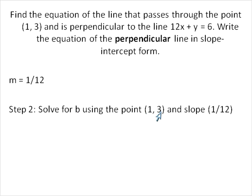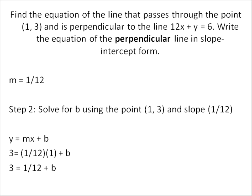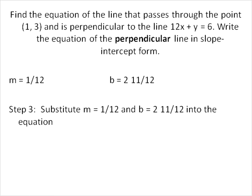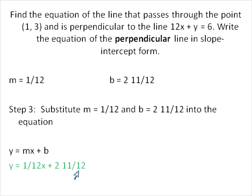Now I'm going to solve for my value of b using the point (1, 3) and slope 1/12. I substitute that information into y = mx + b: x is 1, y is 3, and m is 1/12. Then I solve for b. 1 times 1/12 is 1/12. And 3 minus 1/12 is 2 and 11/12. So my b value is 2 and 11/12. I take that information and substitute into y = mx + b. My final answer is y = (1/12)x + 2 and 11/12.